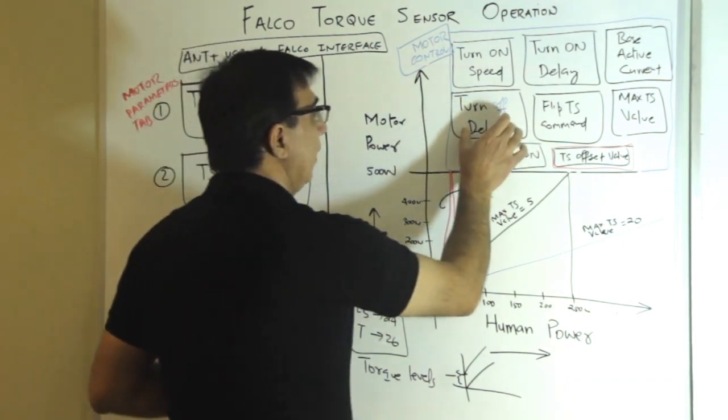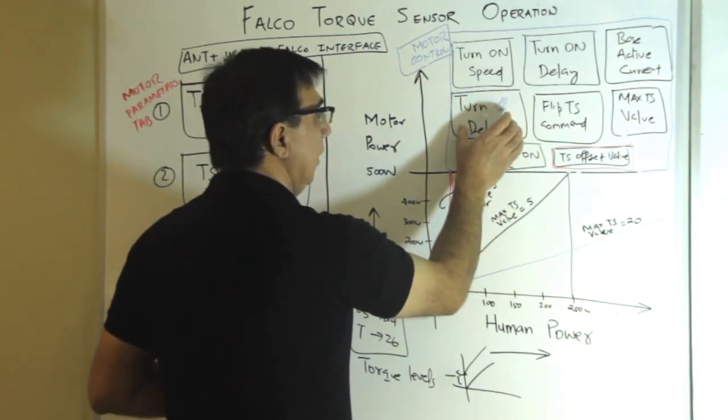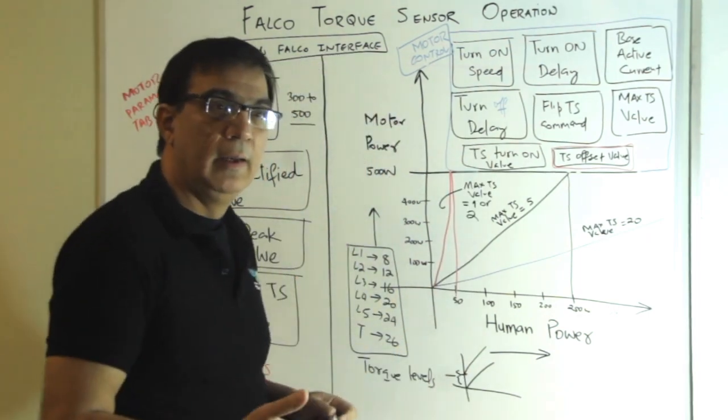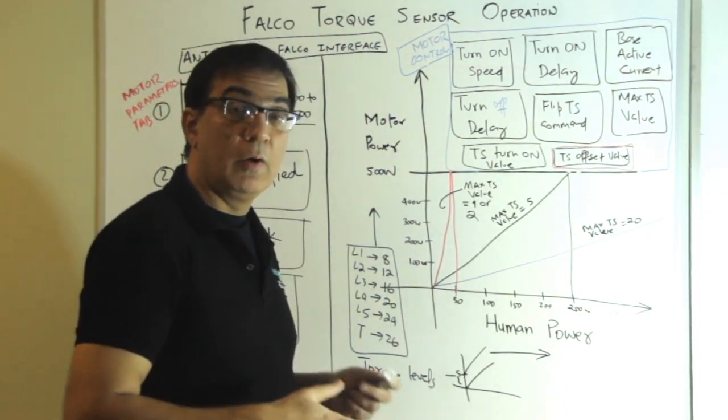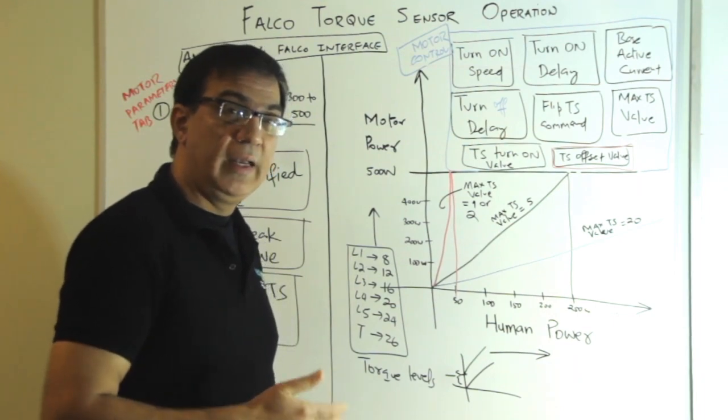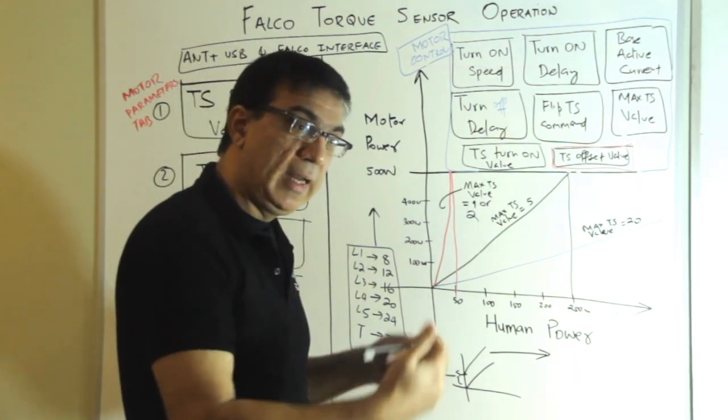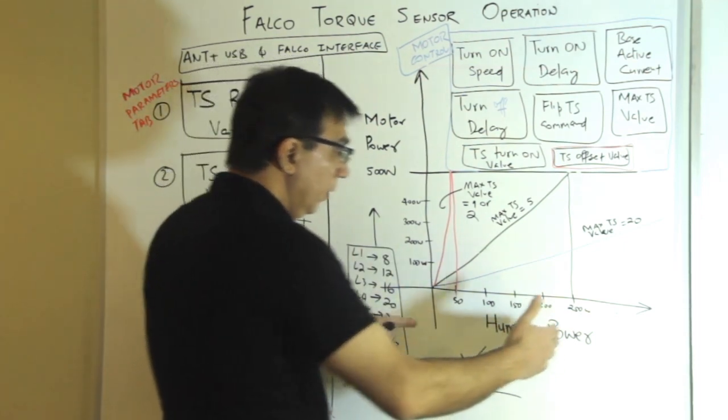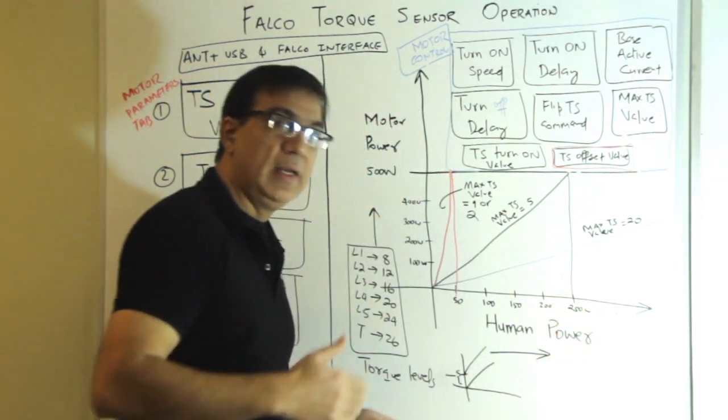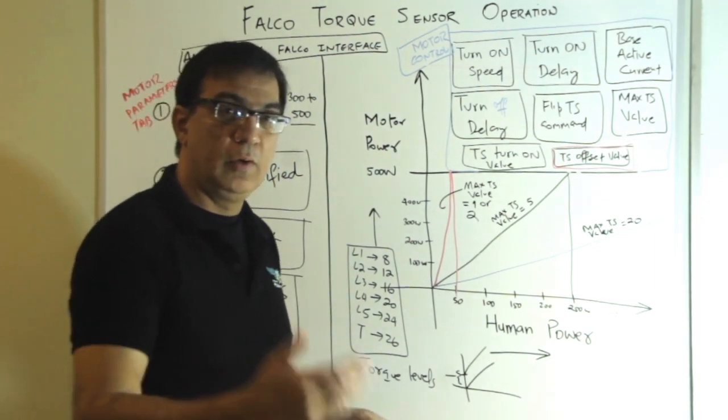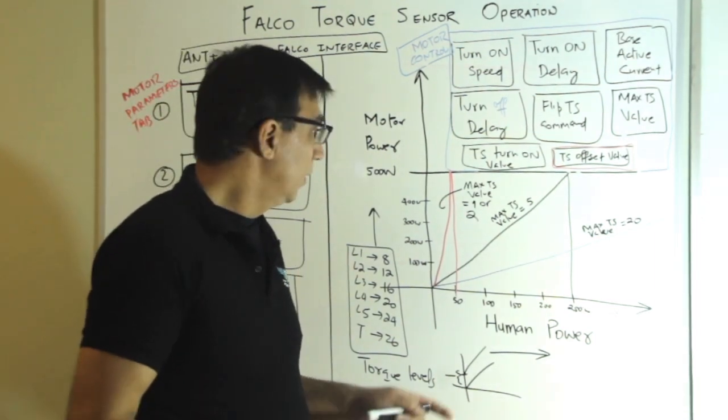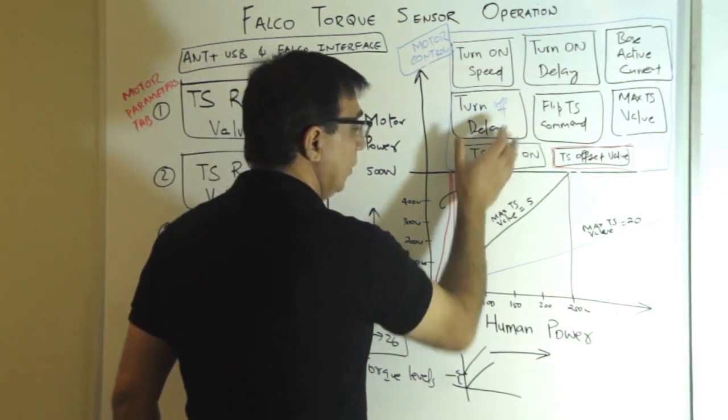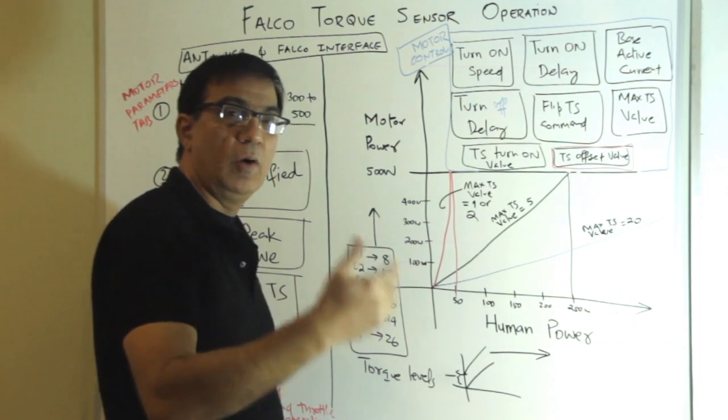Then you have a turn off delay. After you stop pedaling, how long after I stop pedaling should the torque sensor turn off? Now, why do we have turn off delay? The reason we have a turn off delay is to take into account that as you go higher in speed, the humans lose ability to produce torque because you have got more focus on the power. So turn off delay is to take into account your speed variation of the power.